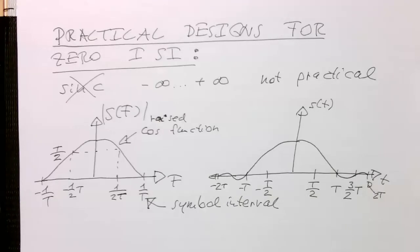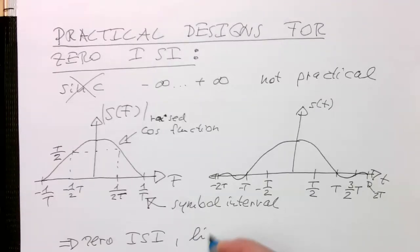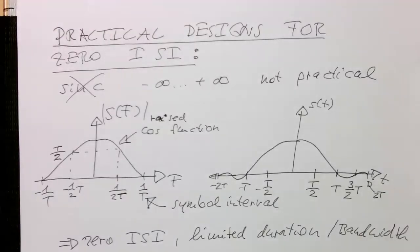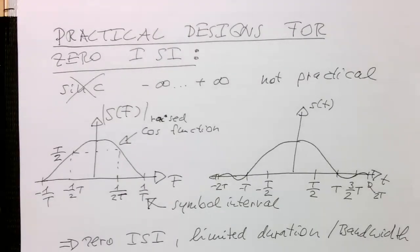So that's a practical implementation. So we have zero ISI, we've got limited duration, limited duration and frequency and bandwidth. Limited duration and bandwidth. So that's a practical implementation of that. And this shape is widely used.